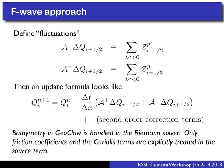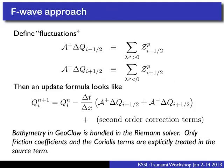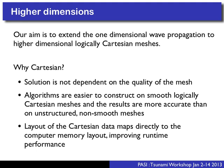If you go into GeoClaw and look at how the bathymetry term is treated, you might look at the Fortran file called src2.f in the GeoClaw library. What you'll see is that the bathymetry is not included there at all. The only things treated in the source term file are friction coefficients and Coriolis terms. To see where the bathymetry is treated, you actually need to go into the normal Riemann solver. That's how it's handled in GeoClaw.